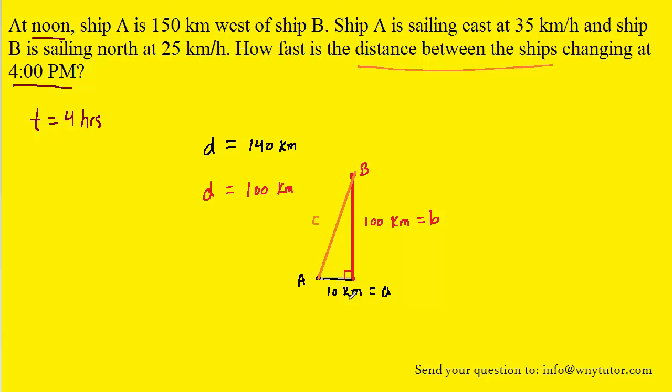Now, of course, because it's a right triangle, we know that the Pythagorean theorem would apply. So let's write that down. Now, because the question is asking how fast, we know that the question is really asking us for a rate. So that would be the clue that this is a related rates problem. And of course, to proceed, we would have to take the derivative of our equation with respect to time.